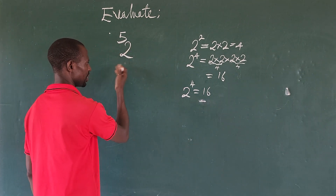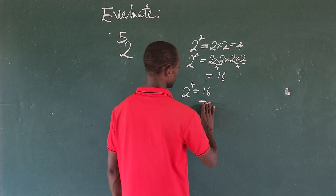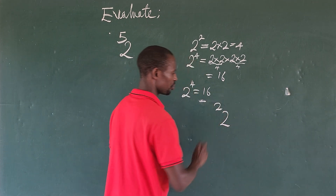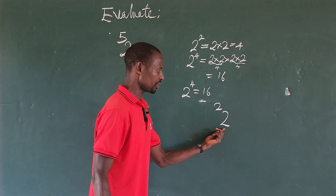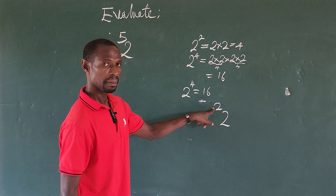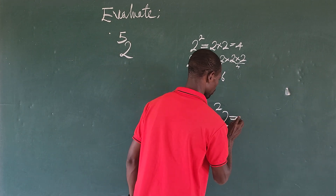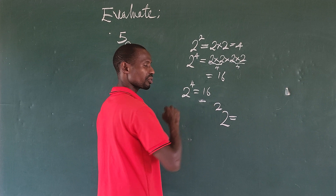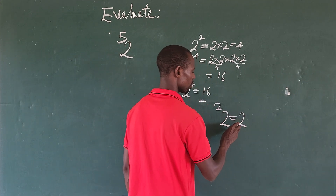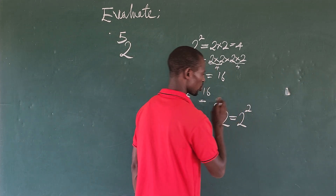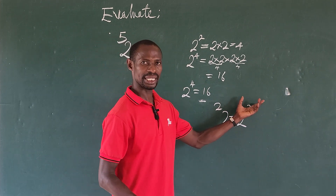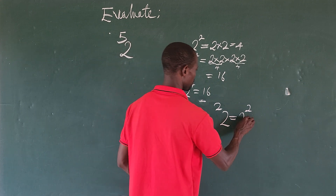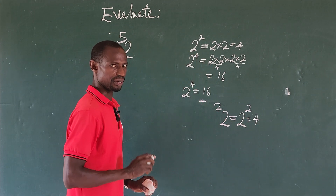Now let's come to the topic of the day. If we have a tetration expression like two with a bigger two written above it, what does it mean? It means we are to express the base two raised to a tower for the number of levels indicated. So two tetrated to two means two raised to the power of two — we have two towers here — and two raised to the power of two gives us four.